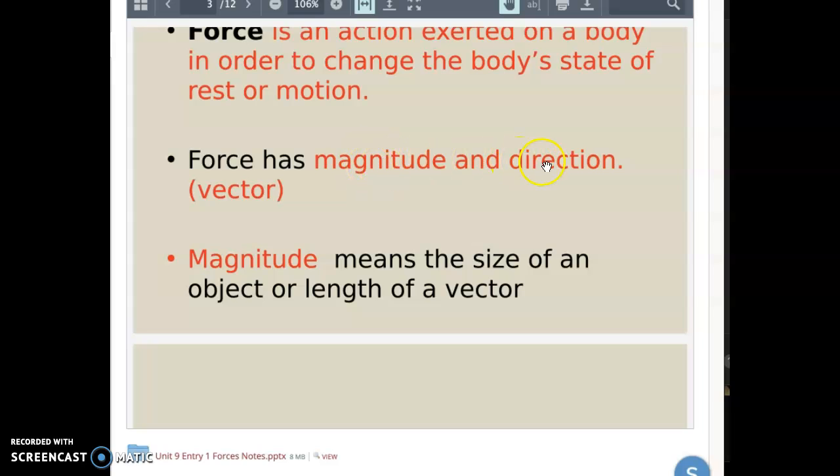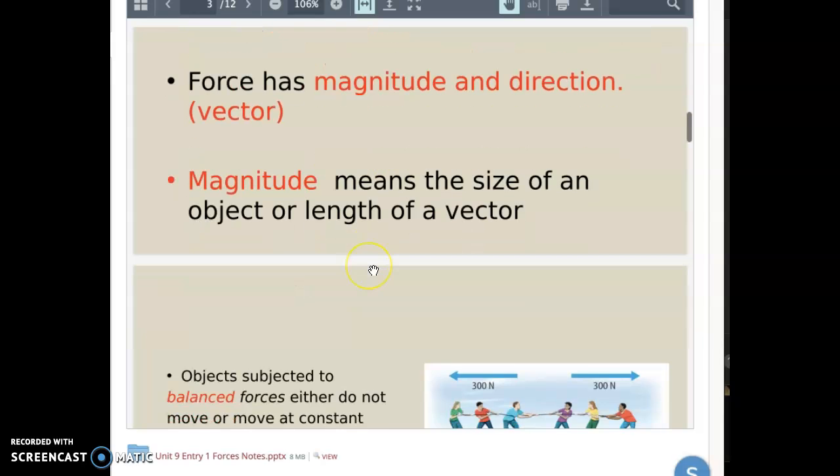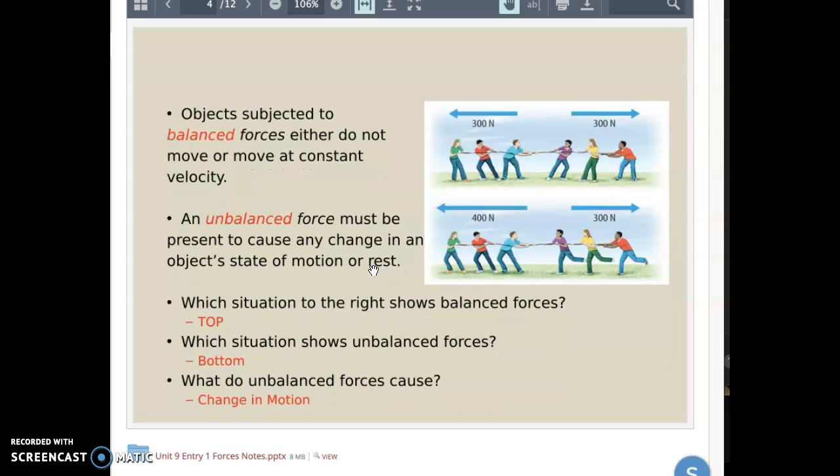Think like velocity has a direction and it has a speed to it. That'd be a magnitude and direction, it's a vector. So objects either have balanced or unbalanced forces.